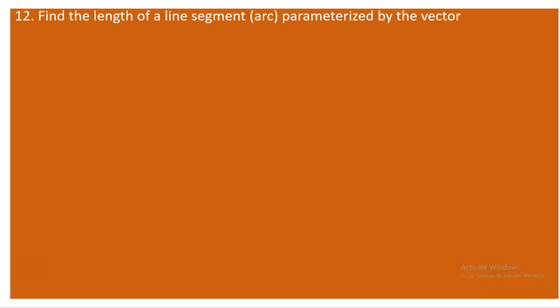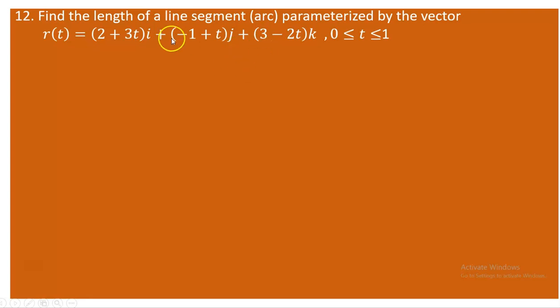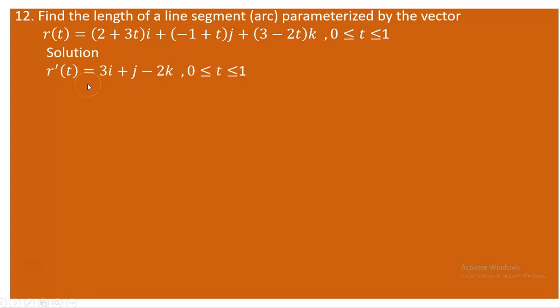Next is question 12, where we find the length of a line segment parameterized by the vector r(t) = (2 + 3t)i + (-1 + t)j + (3 - 2t)k, where t runs from 0 to 1. Since we have a linear t, this traces a line segment. As usual, we find the derivative: the derivative of 3t is 3, the derivative of t is 1, and the derivative of -2t is -2. The constants contribute 0, so r'(t) = 3i + j - 2k.